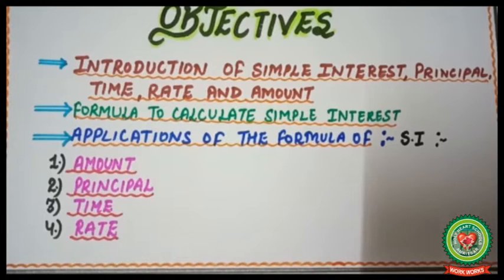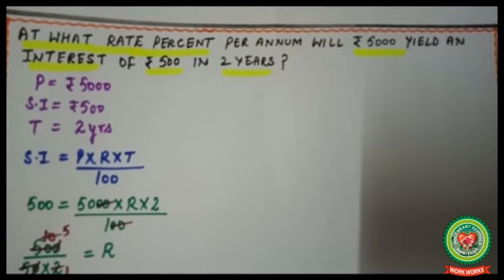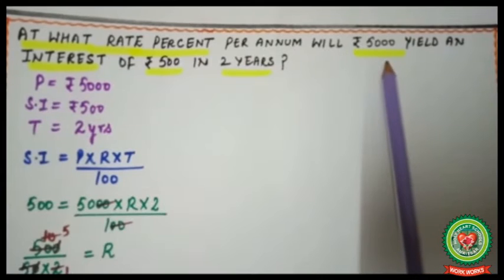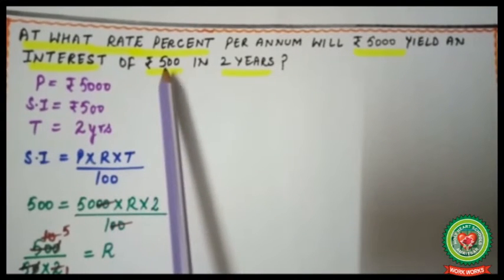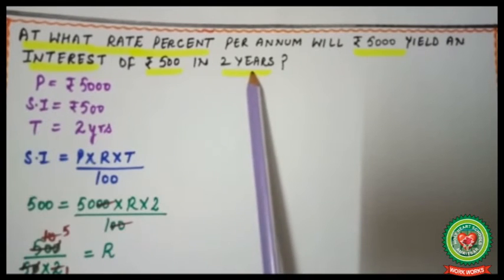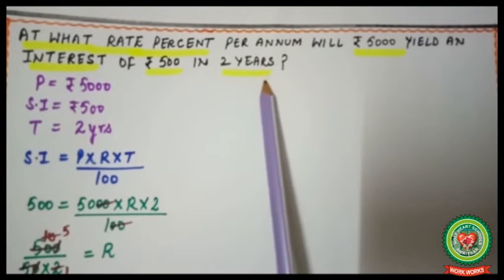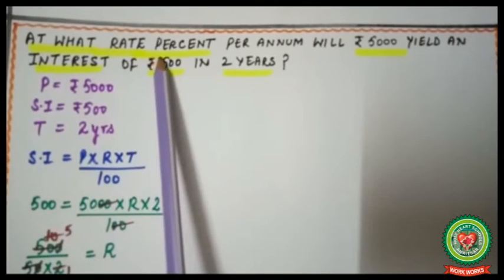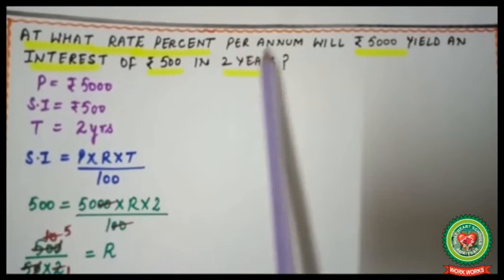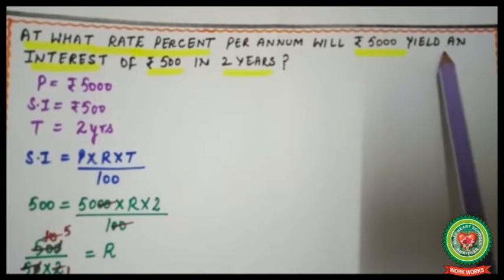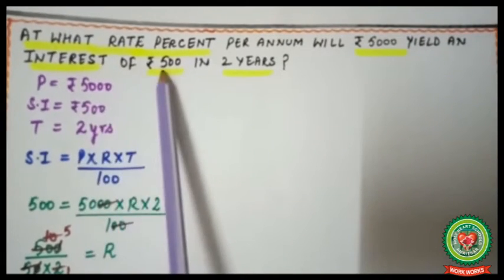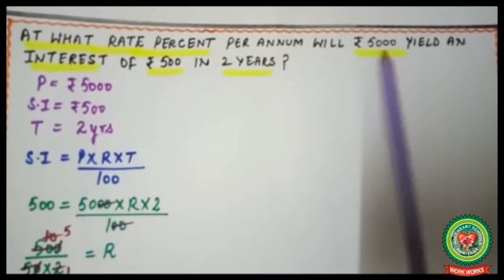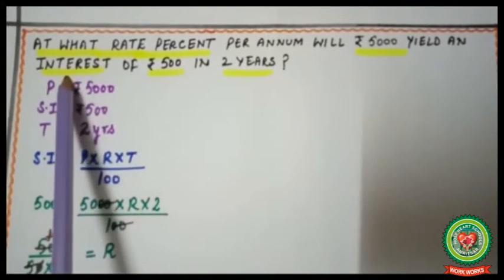Let's get started with our first example. The statement reads: at what rate percent per annum will rupees 5000 yield an interest of rupees 500 in two years? We need to find rate, so we underline that. Rupees 5000 is the principal and rupees 500 is the interest.